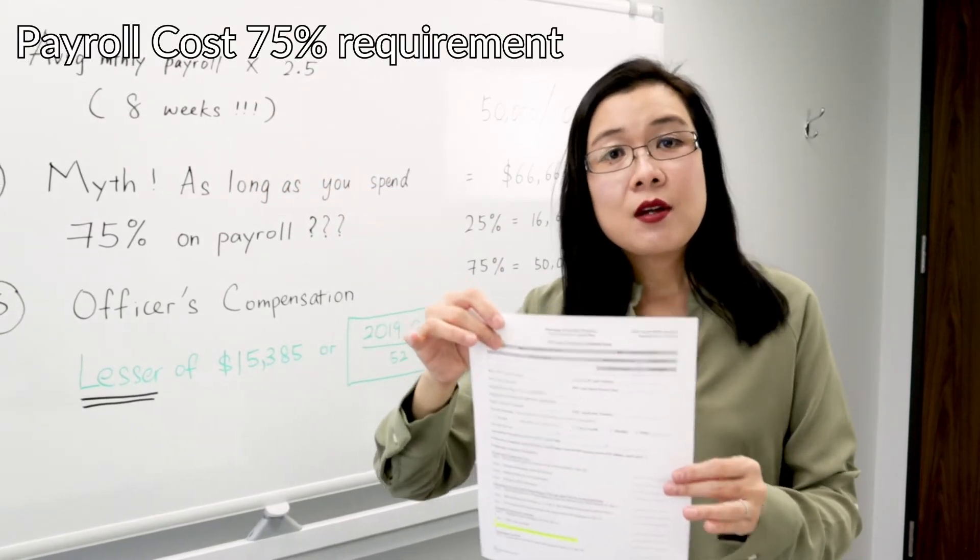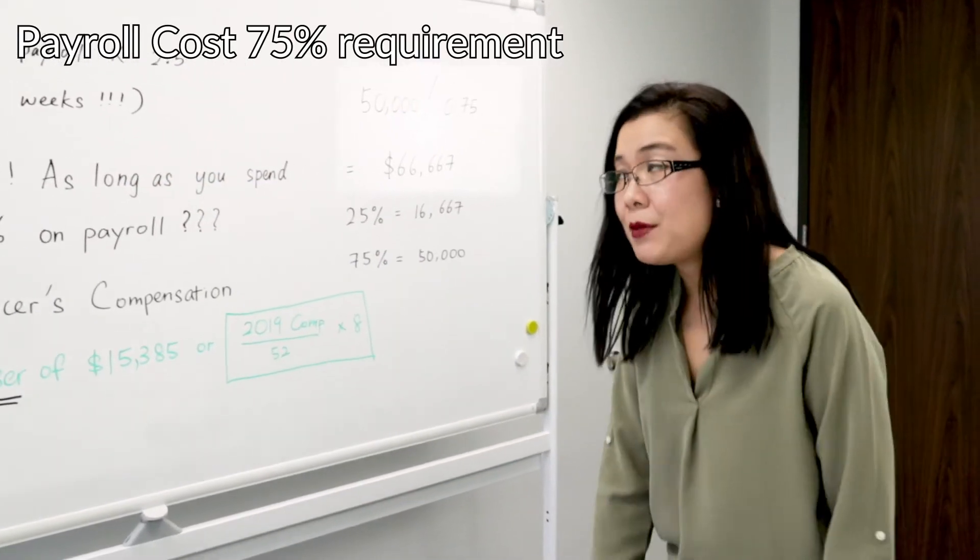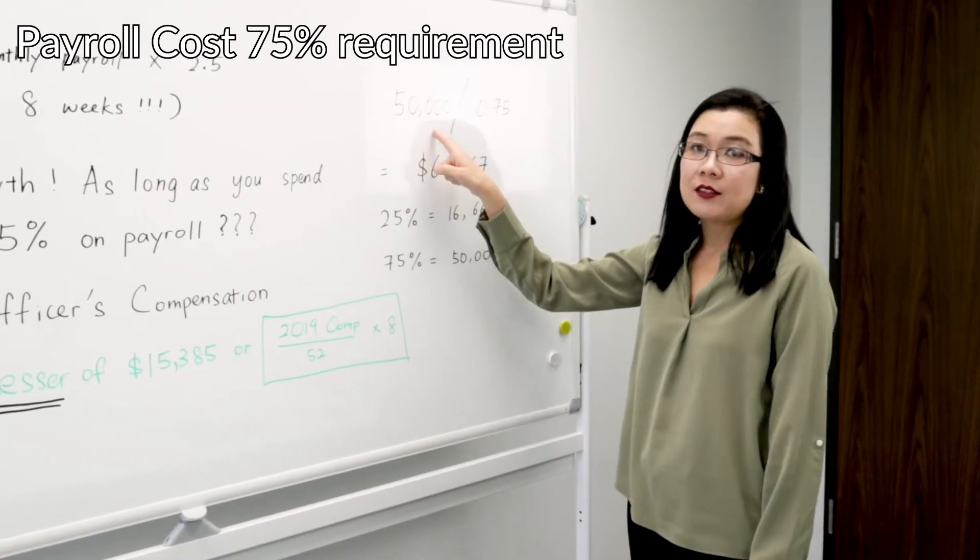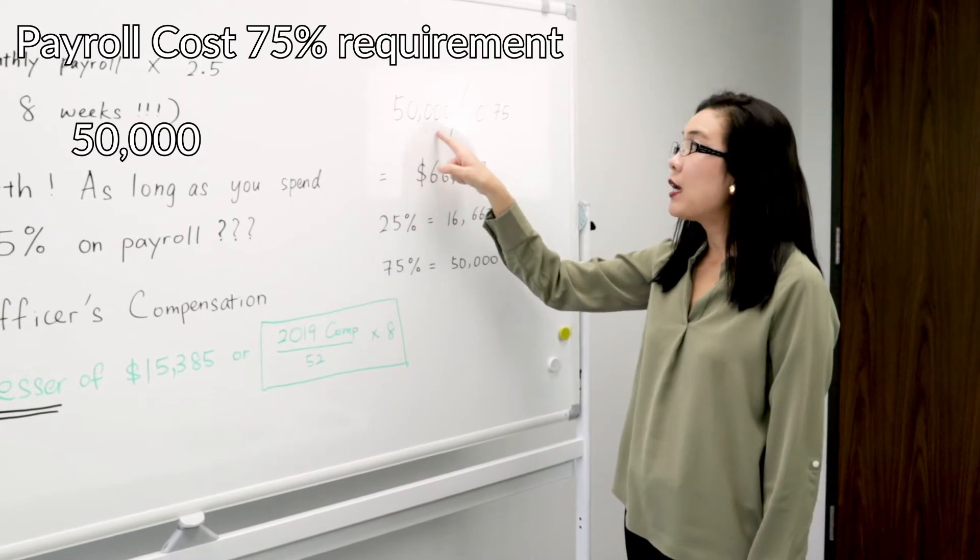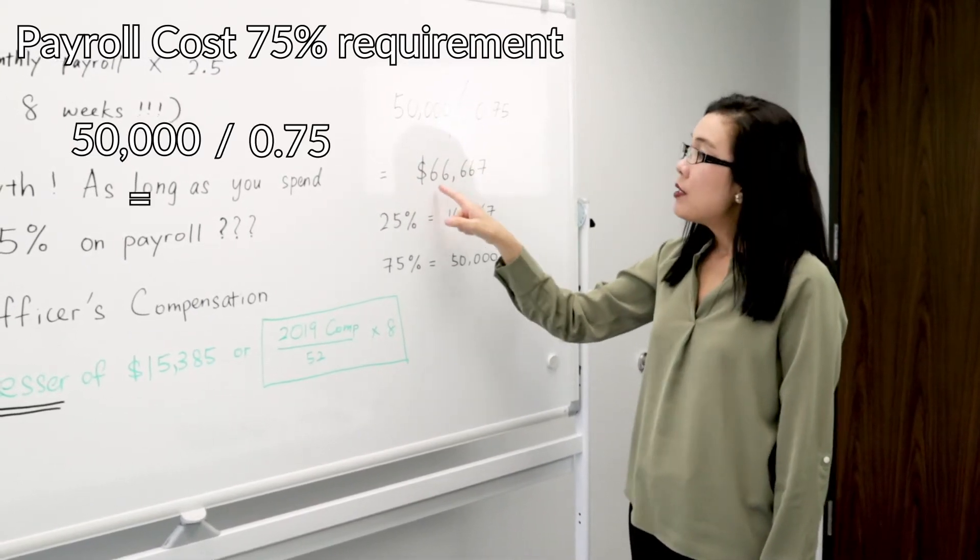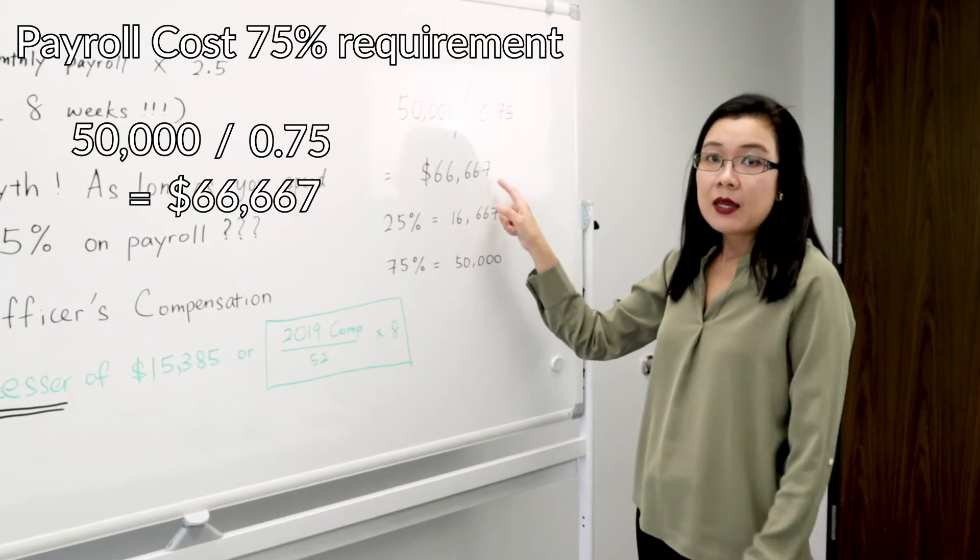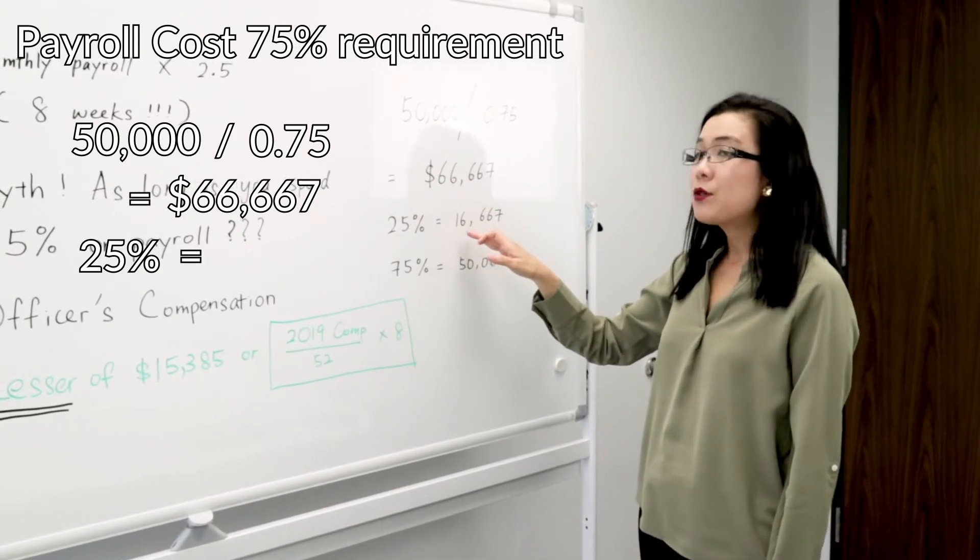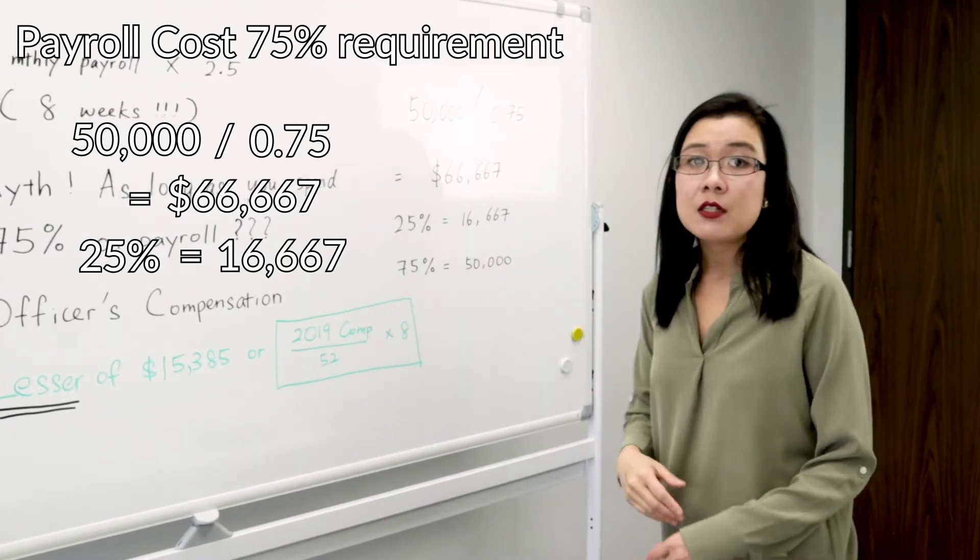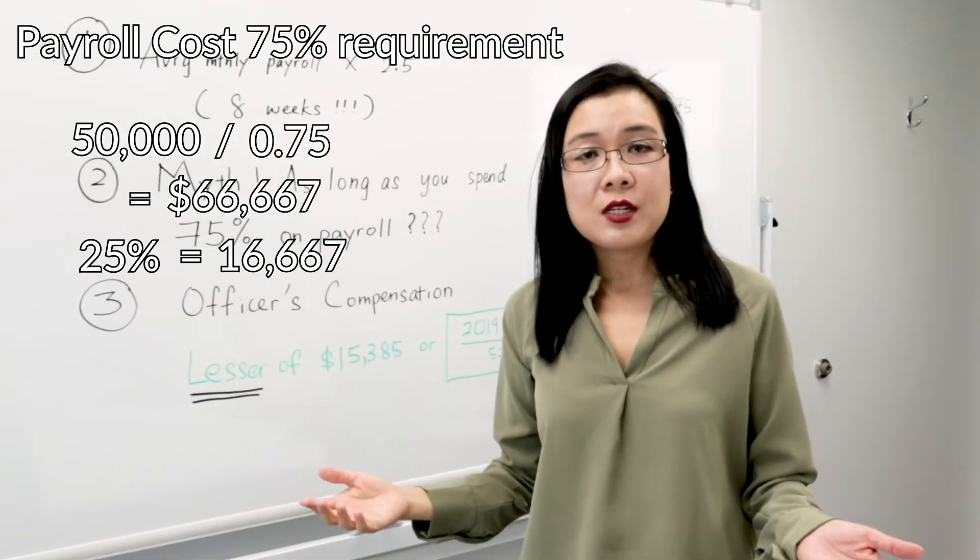How does that work? Let me show you. So let's say for eight weeks you pay $50,000. The way to do the calculation is that you take the $50k divided by 0.75 equals $66,667, and 25% is equal to $16,667. So you have to use this formula to determine whether you will get 100% loan forgiveness for the PPP funds that you receive.